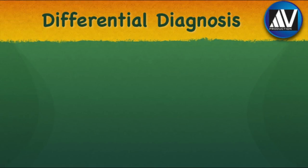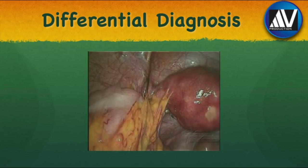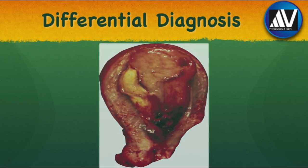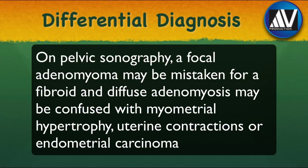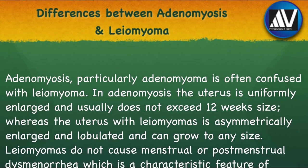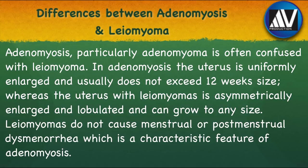Differential diagnosis of adenomyosis includes leiomyoma, pelvic endometriosis, chronic PID, and endometrial carcinoma. On sonography, a focal adenomyoma may be mistaken for a fibroid, and diffuse adenomyosis may be confused with myometrial hypertrophy, uterine contractions, or endometrial carcinoma. Adenomyosis, particularly adenomyoma, is often confused with leiomyoma. In adenomyosis, the uterus is uniformly enlarged and usually does not exceed 12 weeks in size, whereas the uterus with leiomyomas is asymmetrically enlarged and can grow to any size. Leiomyomas do not cause menstrual or postmenstrual dysmenorrhea, which is a characteristic feature of adenomyosis.